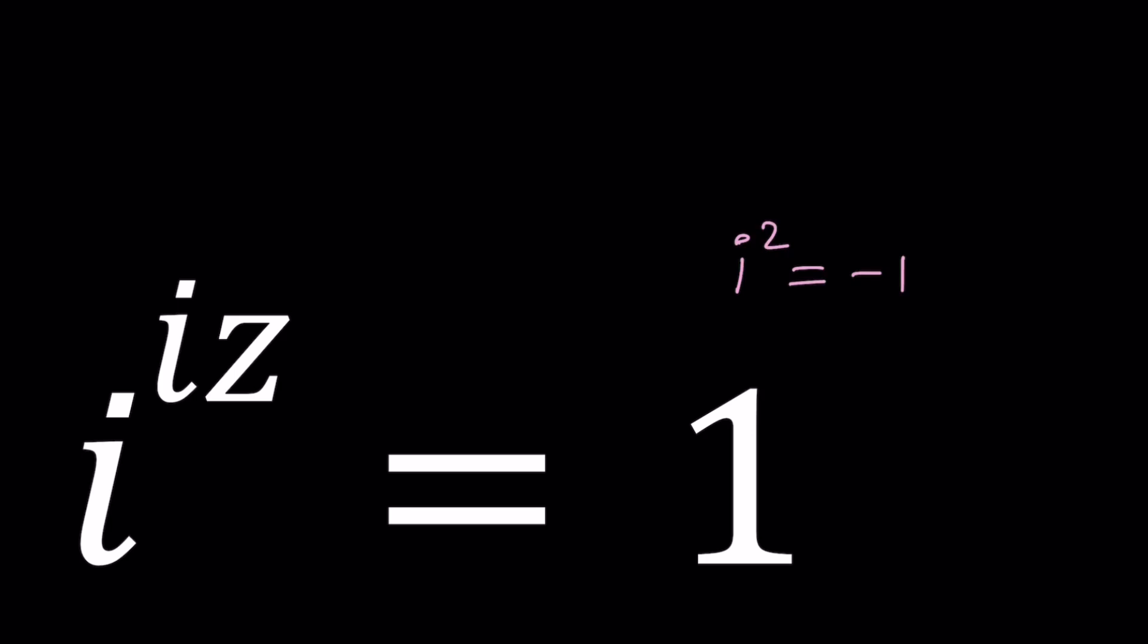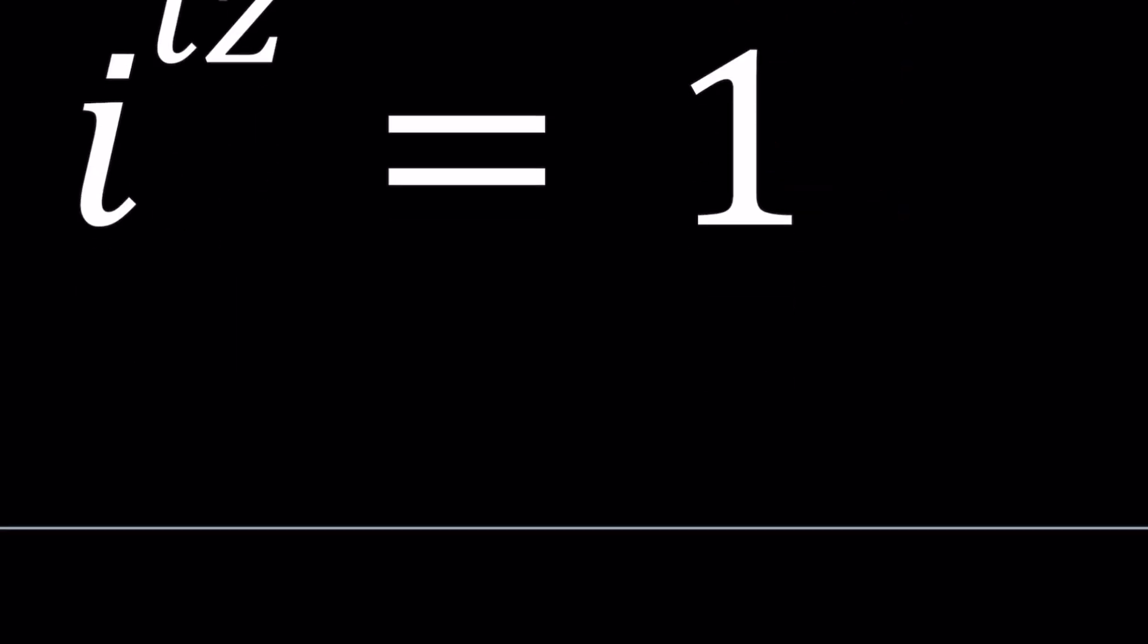You could but I'm not sure if that's going to help and you might be introducing extraneous solutions because squaring both sides brings in some problems. Instead let's use what's called complex exponentiation. Whenever you have something like z to the power W, you can write this as e to the power W ln z.